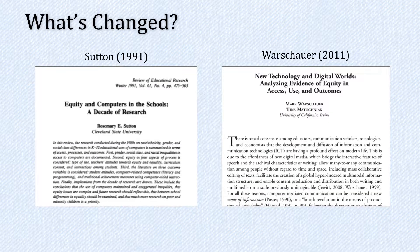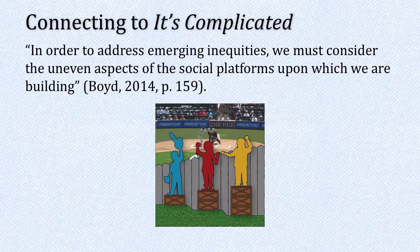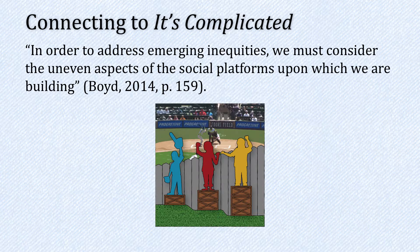So there we have a side-by-side 1980s versus 2000s comparison on the impact of race, class, and gender differences in access, processes, and outcomes. I want to connect all of this to Dana Boyd's book, It's Complicated, in which Boyd argues that in order to address emerging inequities, we must consider the uneven aspects of the social platforms upon which we are building. I want us to think about what are the uneven aspects of social platforms that we are building. Okay everyone, we're out of time for this week. Thank you, and I'll see you in Canvas.